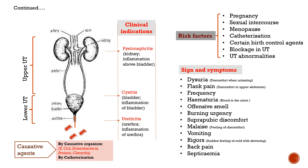Talking about clinical indications, there are three main clinical indications that result from urinary tract infection. Starting from the lower part of the urinary tract, urethritis is inflammation of the urethra. Going upwards, cystitis is inflammation of the bladder. Then pyelonephritis is inflammation above the bladder, that is inflammation of the kidney.